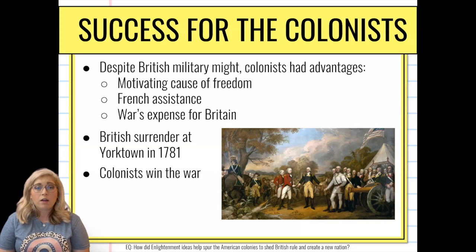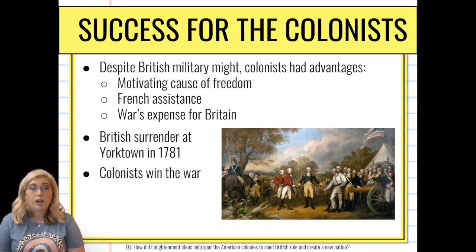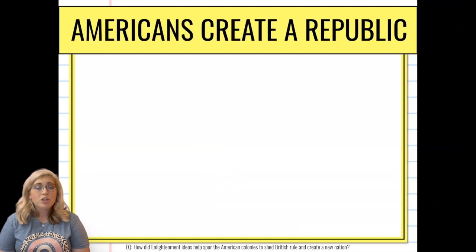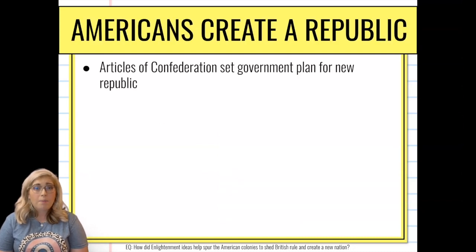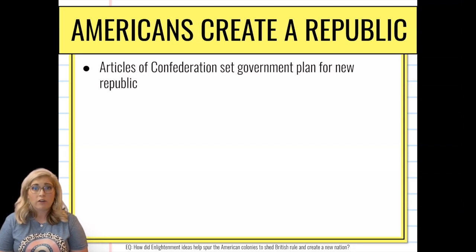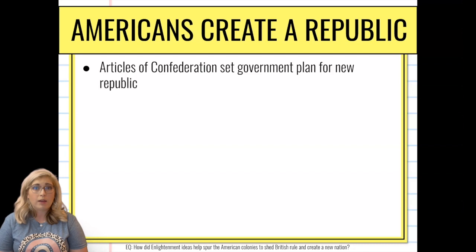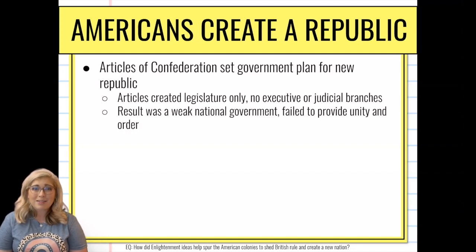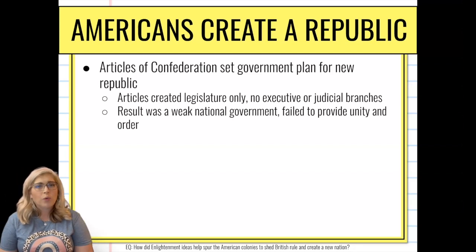From here, the American colonies had to figure out — all right, we're a brand new nation, we are no longer a colonial power, we are our own entity and we have to set up a government. So they do become a republic and publish what are known as the Articles of Confederation, which formally sets up their first government and a plan for the republic. The Articles were pretty weak though — they only set up a legislative branch, with no executive branch and no judicial branch, setting up a weak national government that really failed to provide unity and order.